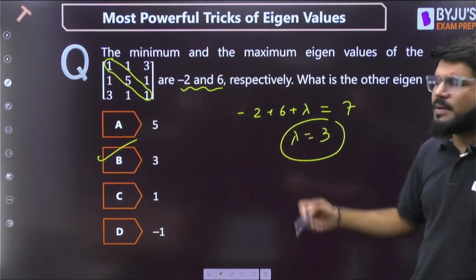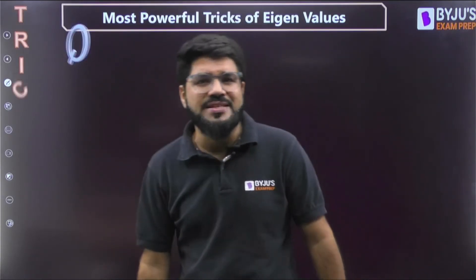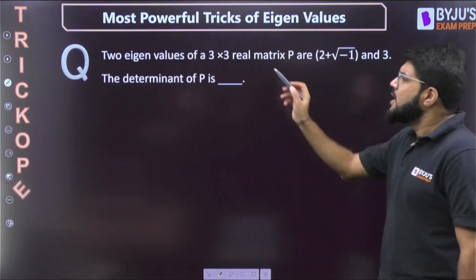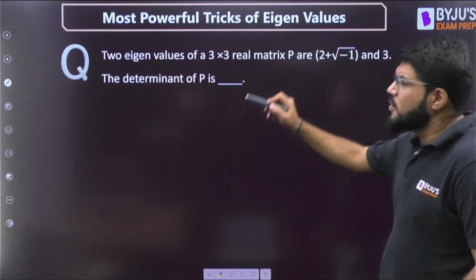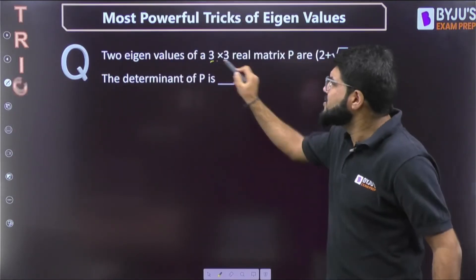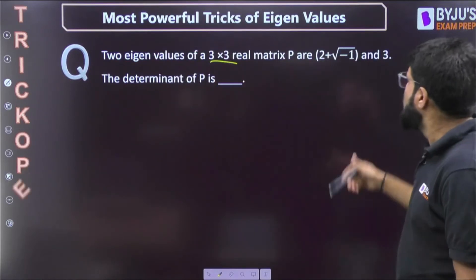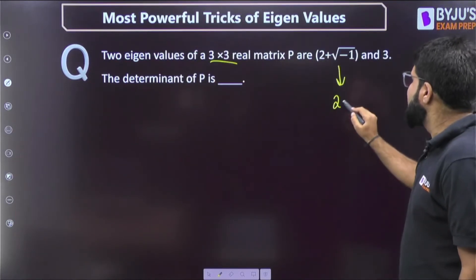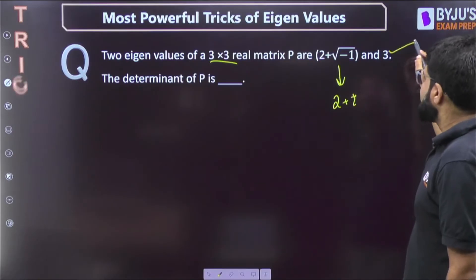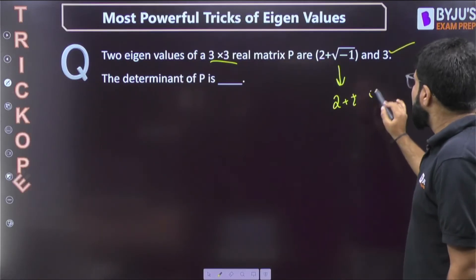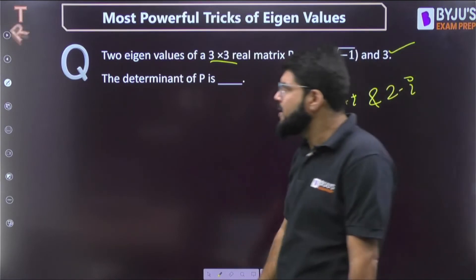Let's have a look. The eigenvalues, two eigenvalues of a 3 cross 3 matrix, so actually 3 cross 3 has 3 eigenvalues, they have given 2: that is 2 plus root minus 1, that is 2 plus i, and 3. If there is 2 plus i, there will also be 2 minus i. That is what the conjugate property tells.